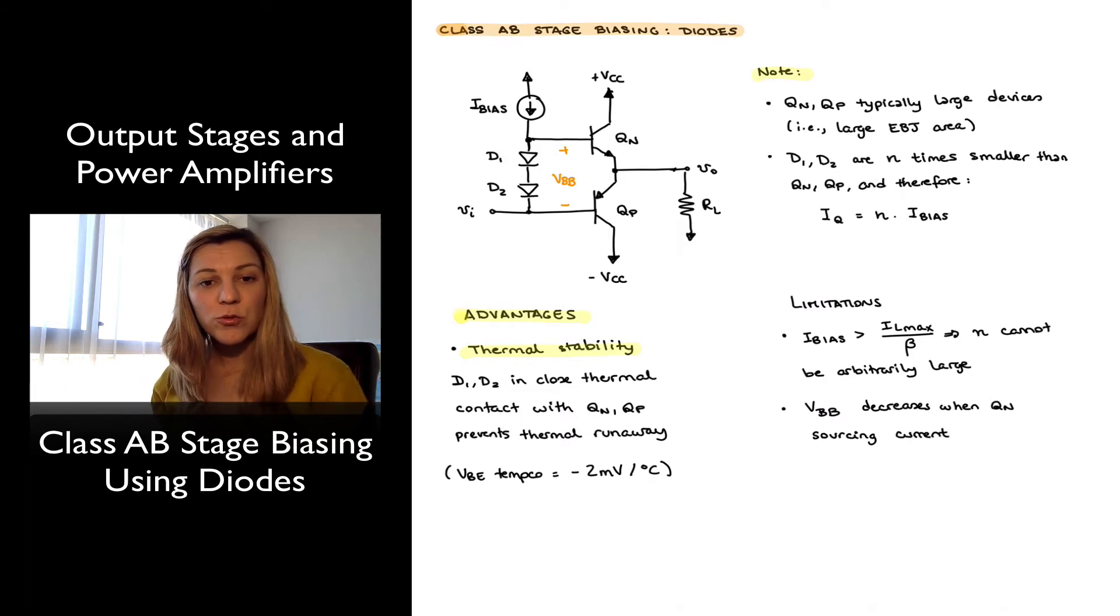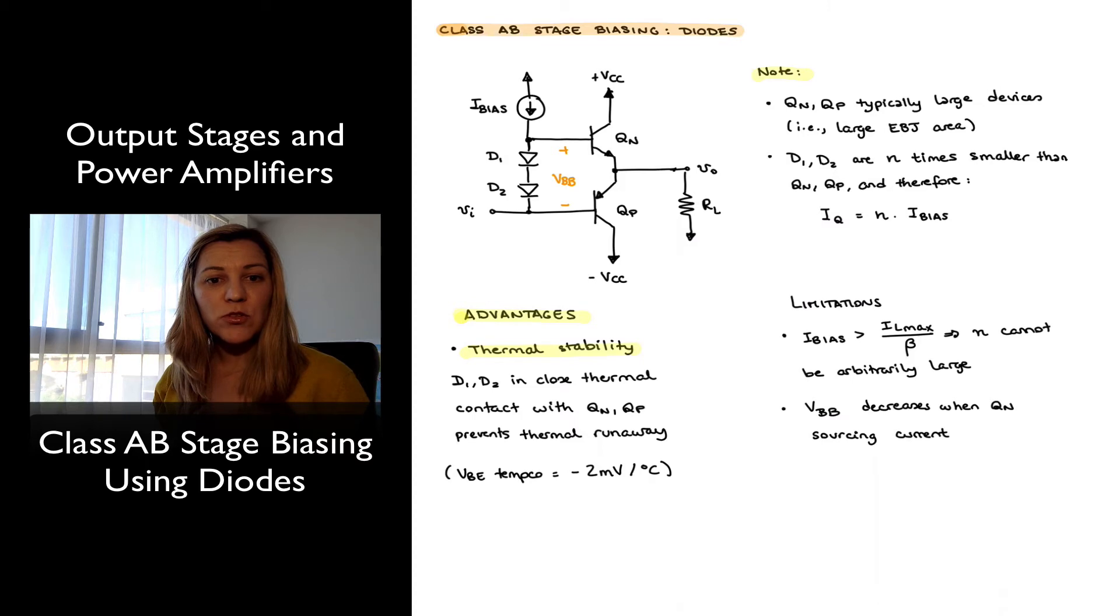And if the temperature continues to increase without bound, it can lead to thermal runaway. It will eventually damage the transistors, because transistors can only support a junction temperature of about 150 to 200 degrees C. So we need to have some sort of mechanism to counteract the effect of an increase in temperature, some negative feedback. And diodes D1 and D2 provide that.